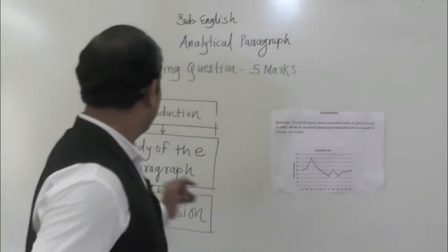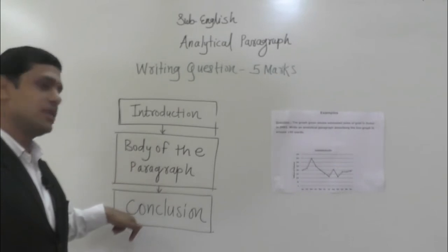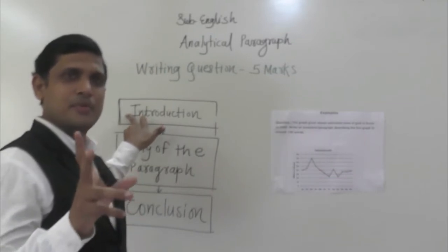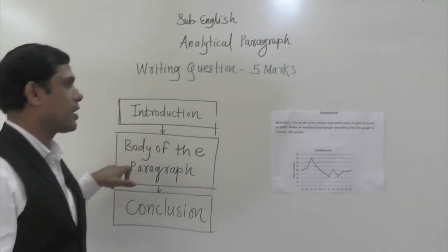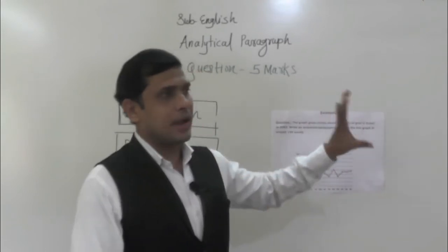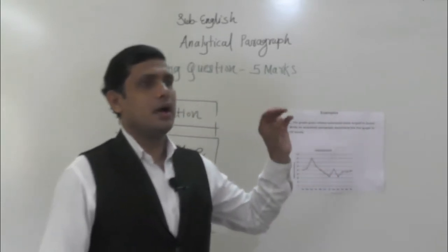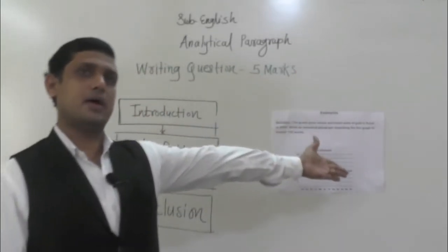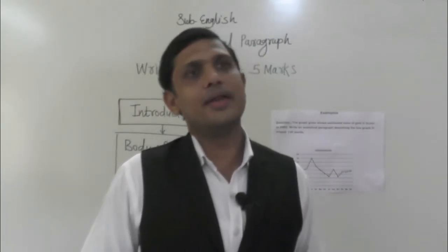In an analytical paragraph there will be three sections: first is the introduction, second is the body of the paragraph, and third is the conclusion. The introduction explains briefly what is given — it should not be lengthy, it should be as compact as possible. The body covers what is given in the graph, chart, or maps in a factual manner. And the conclusion summarizes exactly what the total graph conveys. That is called an analytical paragraph.